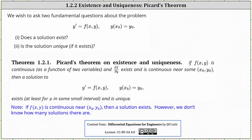Welcome to a lesson on the existence and uniqueness of an initial value problem in the form of y prime equals f of x comma y, with initial condition y of x sub zero equals y sub zero. We want to ask two fundamental questions about the problem: number one, does a solution exist? And number two, is the solution unique if it exists?